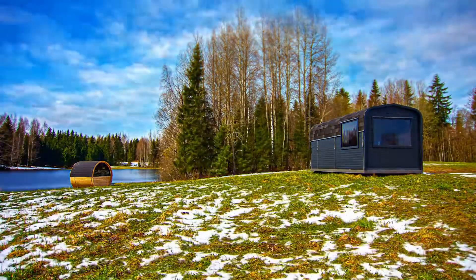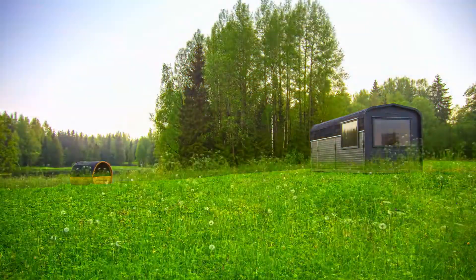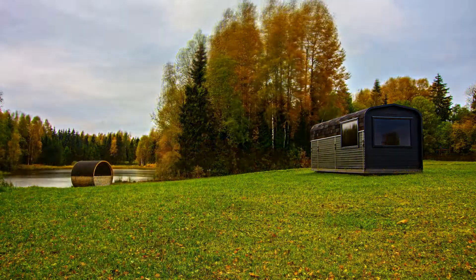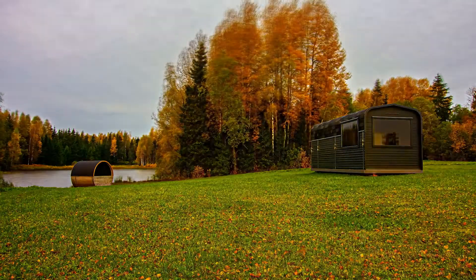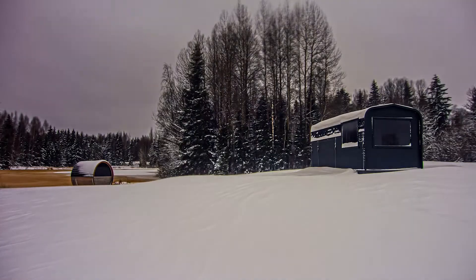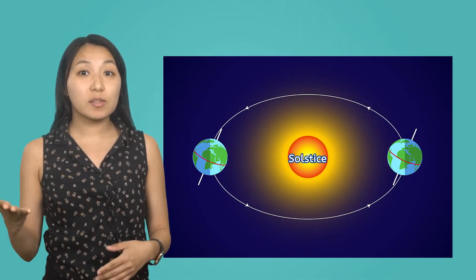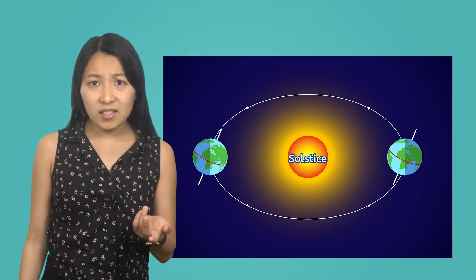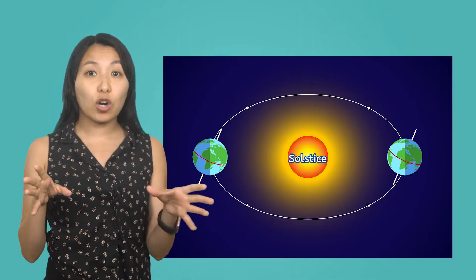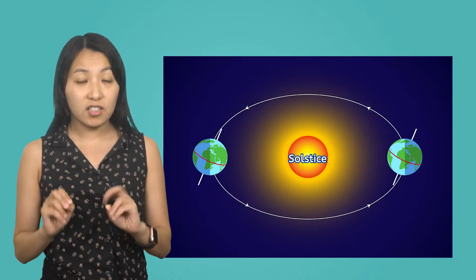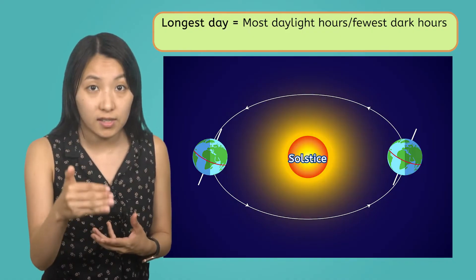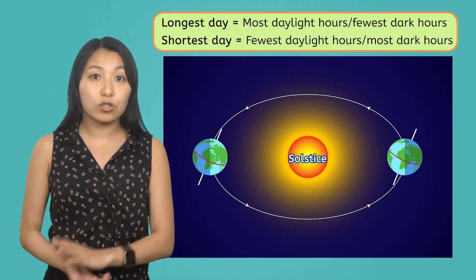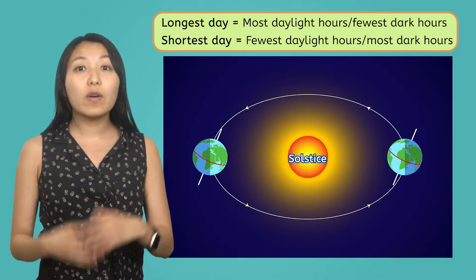There are four key points in Earth's orbit that define when one season changes to the next. Two of them are called solstices and two are called equinoxes. The solstices happen in winter and summer and mark the longest and shortest days of the year. The equinoxes happen in spring and fall and mark when the day has equal amounts of day and night. A day is always 24 hours long, but the split between daylight and darkness within those 24 hours changes. The longest day happens when a hemisphere is most tilted toward the Sun, so it has the most daylight hours and fewest hours in darkness, while the shortest day happens when a hemisphere is least tilted toward the Sun, giving it the fewest daylight hours and most hours in darkness.